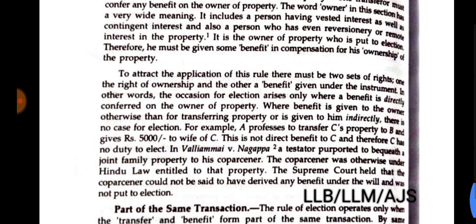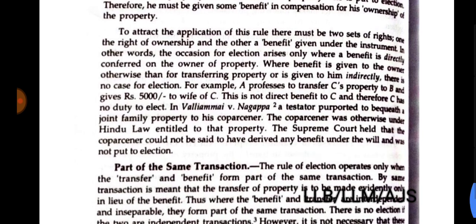It is the owner of the property who is put to election; therefore, he must be given some benefit in compensation for his ownership. To attract the application of this rule, there must be two sets of rights: one, the right of ownership; and the other, a benefit given under the instrument. The occasion for election arises only when a benefit is directly conferred on the owner of the property. Where the benefit is given to the owner otherwise than in lieu of transferring the property, or is given to him indirectly, there is no case for election.